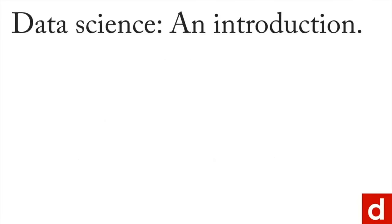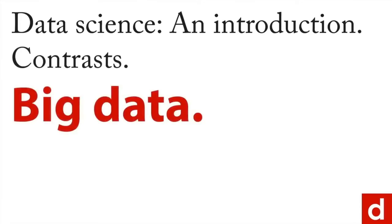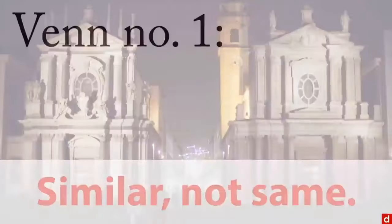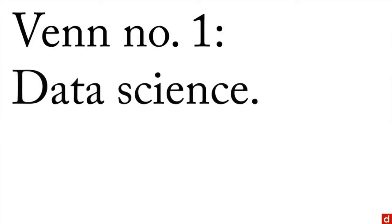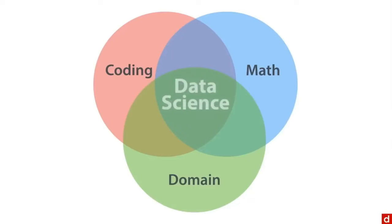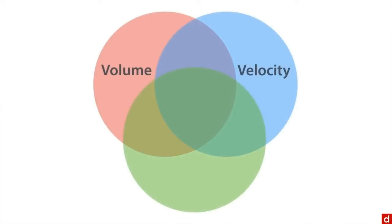To better understand data science, it helps to look at contrasts with other fields. The most informative comparison is with big data, since these two terms are often confused. Both have Venn diagrams associated with them. The data science Venn has three circles: coding, math, and domain expertise — put together, you get data science. The big data Venn also has three circles: high volume of data, rapid velocity of data, and extreme variety of data. Take those three V's together and you get big data.